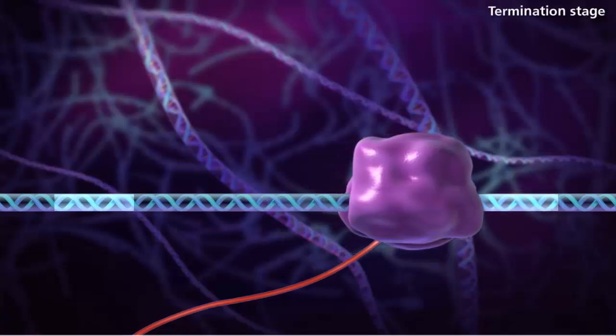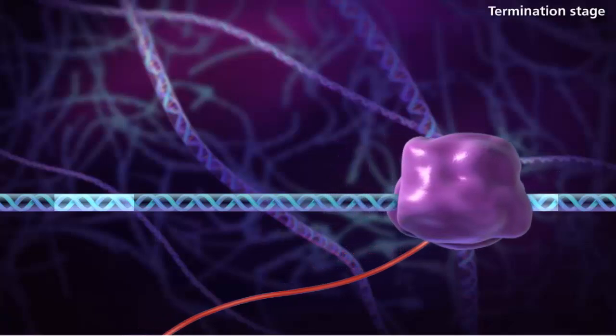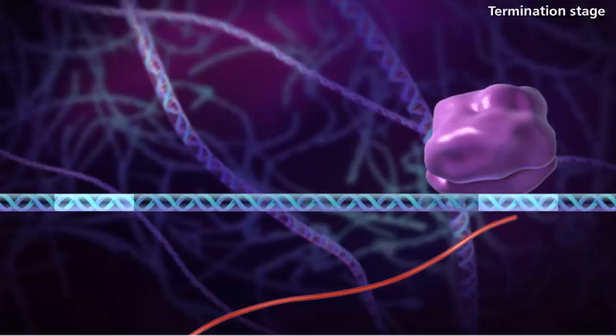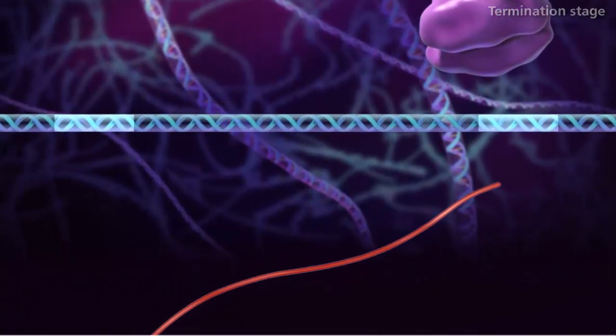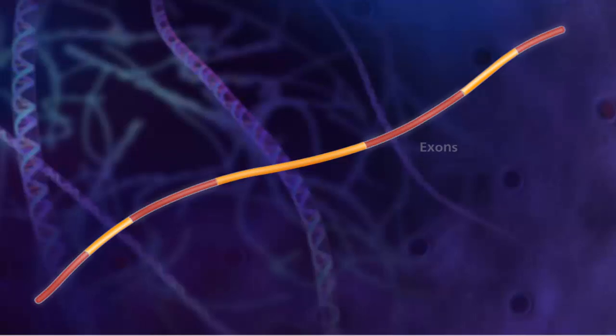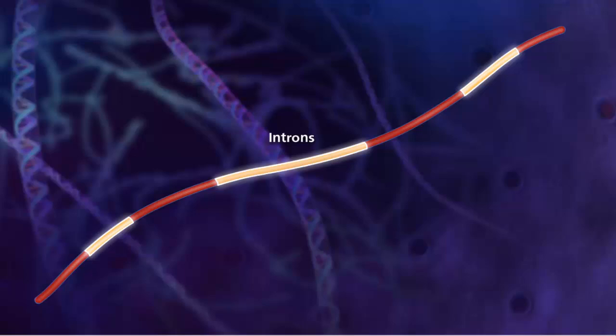The RNA polymerase, the DNA strand, and the messenger RNA transcript dissociate from each other. The strand of messenger RNA that is made during transcription includes regions called exons that code for a protein and non-coding sections called introns. In order for the messenger RNA to be used in translation, the non-coding introns need to be removed.